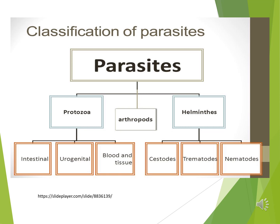Parasites can be classified into three groups. The first is protozoa — they are unicellular organisms. The second is helminths — they are multicellular. And the third is arthropods. Under protozoa, they can be present inside the intestines, in the urogenital system, and in the blood and tissues of the body. Helminths can be present as cestodes (tapeworms), trematodes (flukes), and nematodes (roundworms). Arthropods include insects and arachnids.